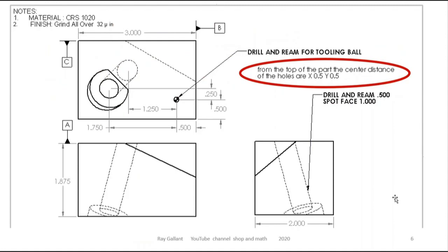Here's our print. We read on our print saying that it's half by half or 0.5, 0.5, 0.5 hole distance.